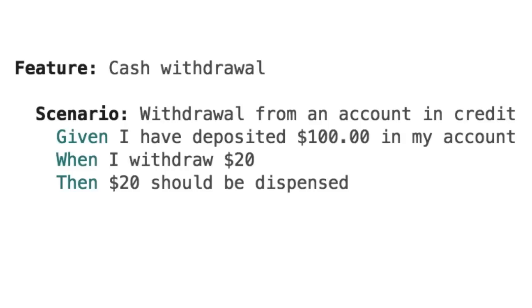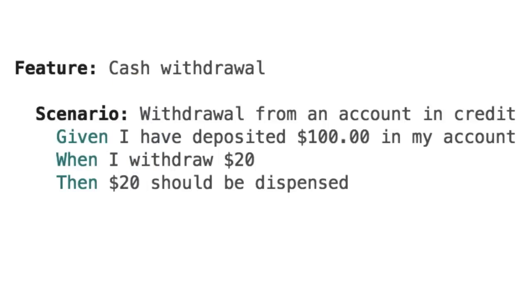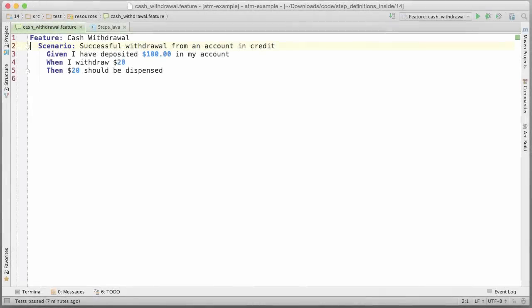As you can see, Gherkin is almost like plain English. We have to use a few special keywords so that Cucumber can understand it too — words like Feature, Scenario, Given, When, and Then. You'll learn all about these in the Cucumber for Java book. We can refine as many examples as we need into this form to create an executable specification for our software.